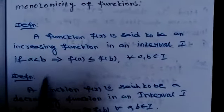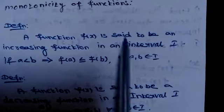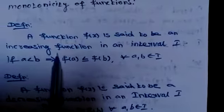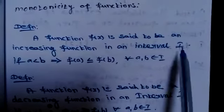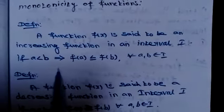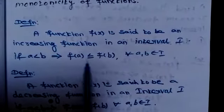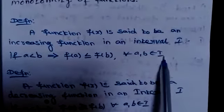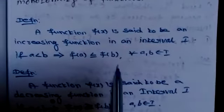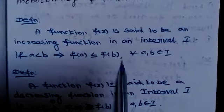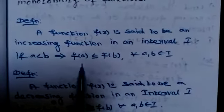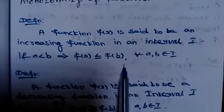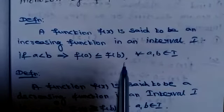See the definition. A function f(x) is said to be an increasing function in an interval I if a less than b implies f(a) less than or equal to f(b), for every a, b belonging to the given interval. So the condition for an increasing function is f(a) less than or equal to f(b).